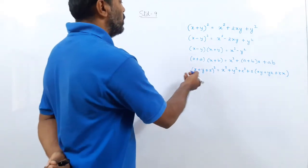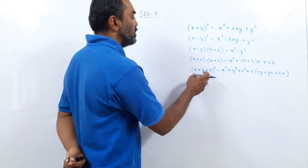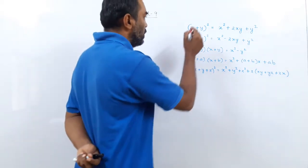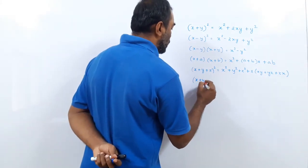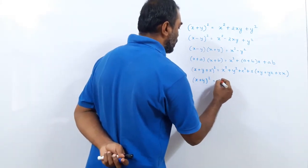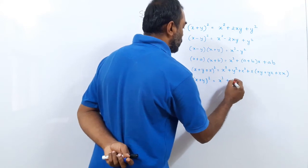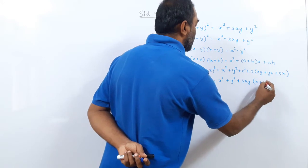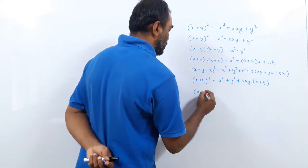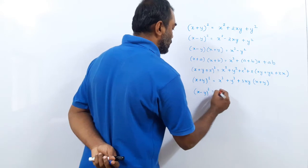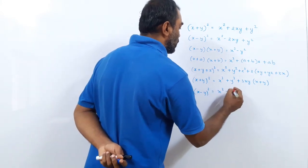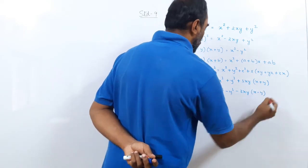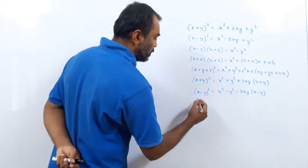The variables can be a, b, c or p, q, r or 2x, 2y, 3z — whatever; this is only the basic form. After the square we move to the cube. (x+y)³ = x³+y³+3xy(x+y). (x-y)³ = x³-y³-3xy(x-y).